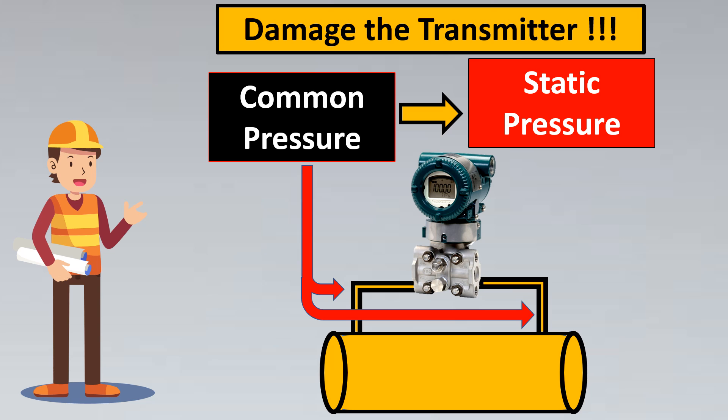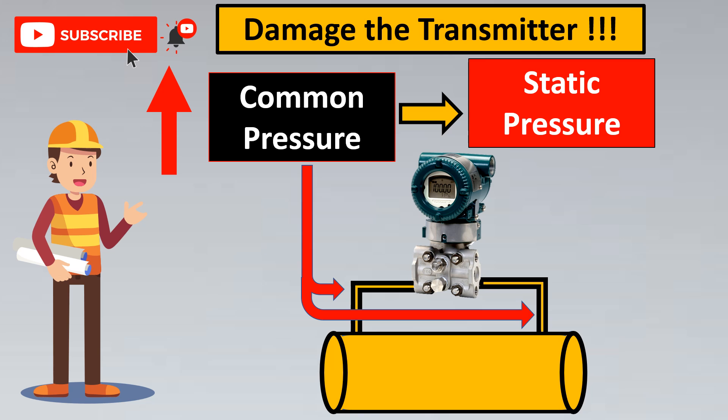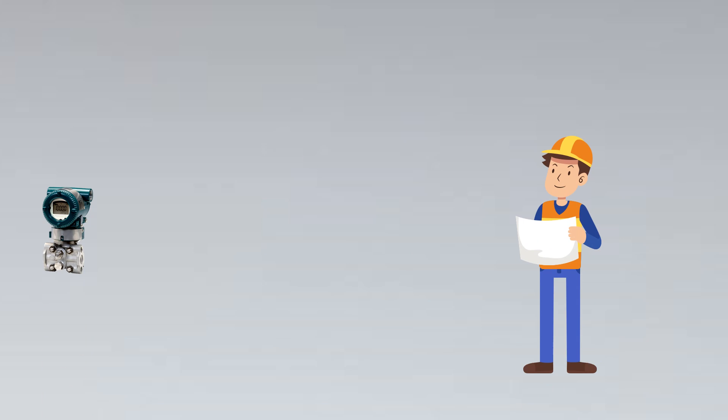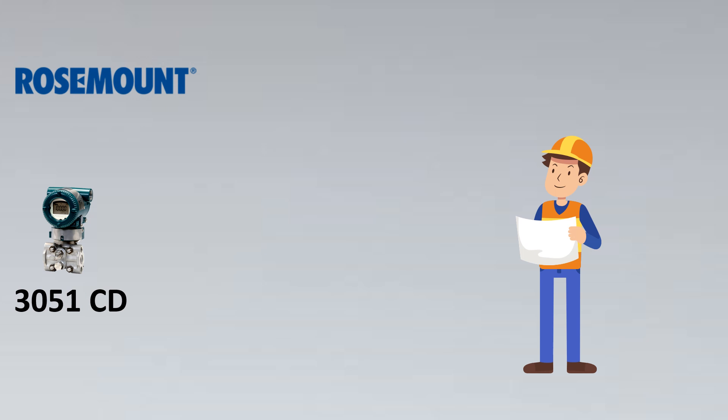In this video, I'll show you a real-life example of a pressure transmitter used worldwide and how you can mitigate this issue. If you want to learn something new every Saturday, please subscribe and press the bell icon. We'll take the example of a very well-known transmitter, the Rosemount 3051CD. Other great transmitters like Yokogawa and Endress+Hauser follow the same philosophy.